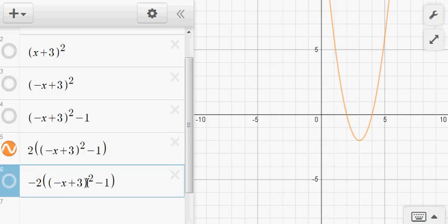So this previous function, the entire thing, is getting multiplied by negative 1. That reflects about the x-axis.